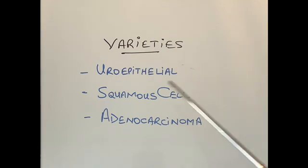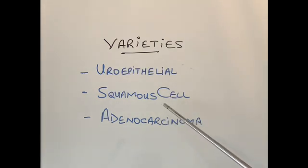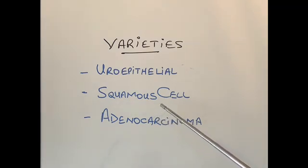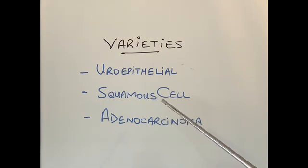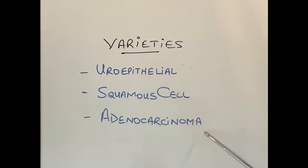The two very uncommon varieties are squamous cell carcinoma and adenocarcinoma. Squamous cell carcinoma happens because of chronic irritation to the bladder — common in people who have catheters in their bladder for a long period of time, or who get repeated infections of the bladder, or who develop stones in the bladder. Adenocarcinoma of the bladder arises from the cells that secrete mucus.